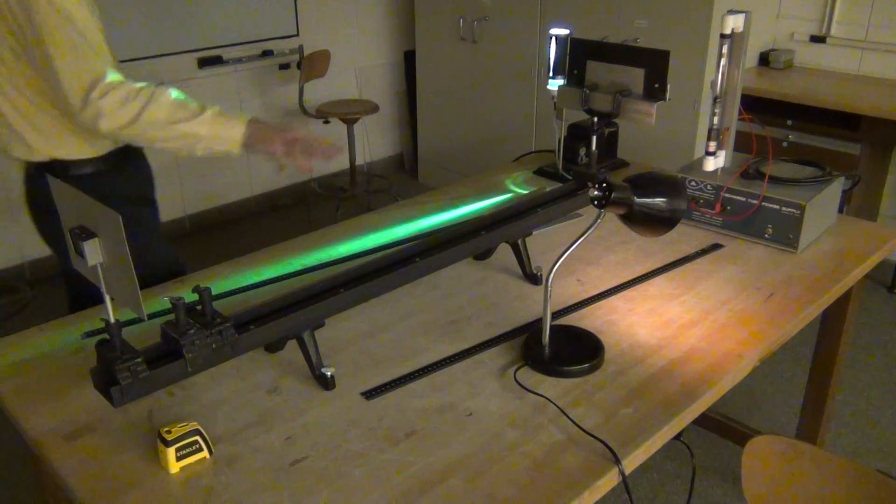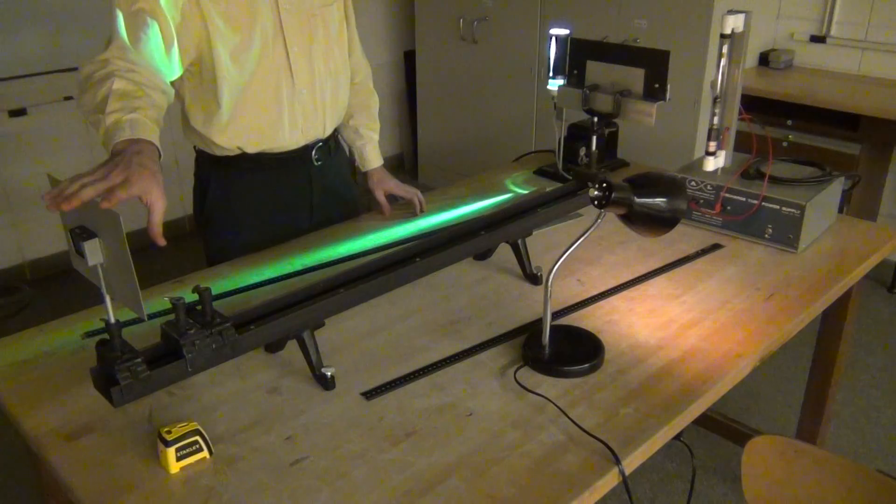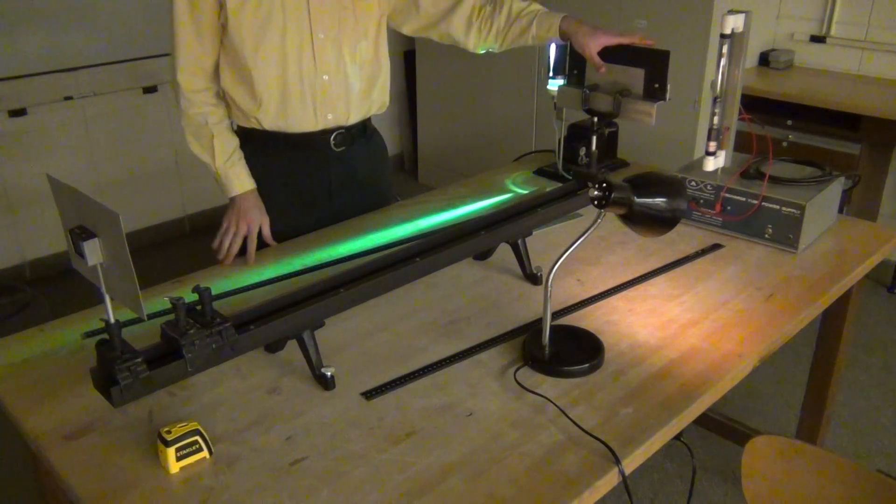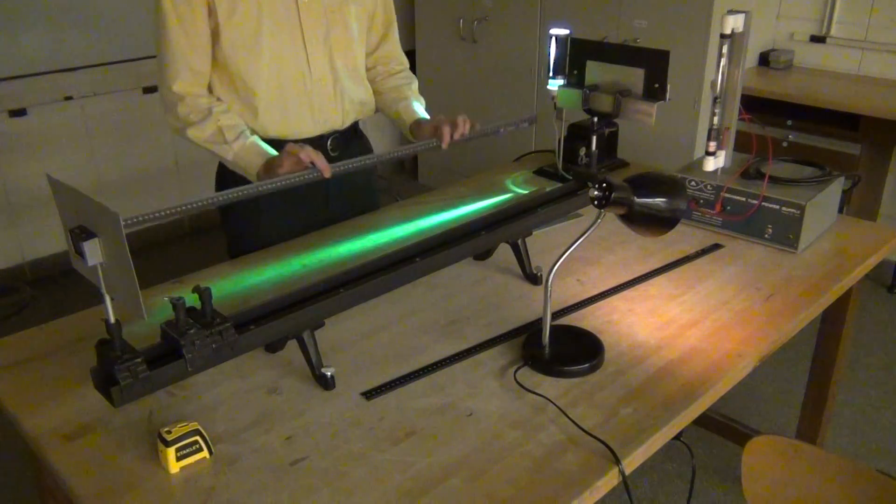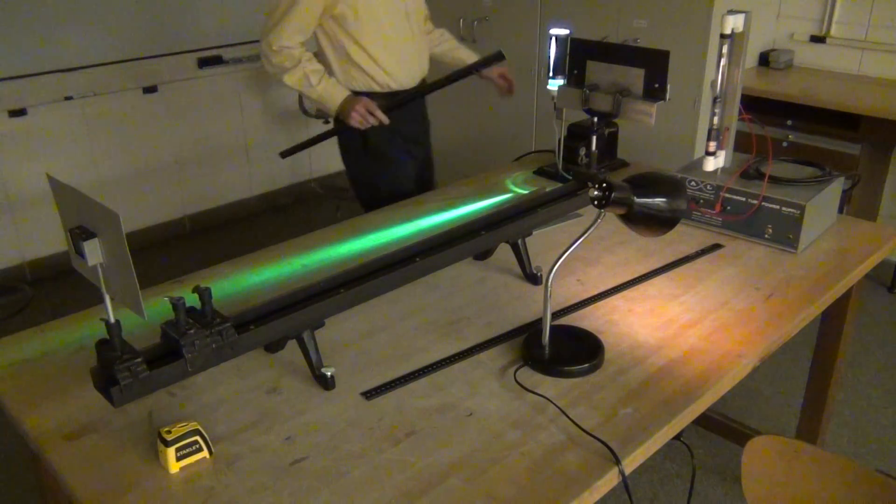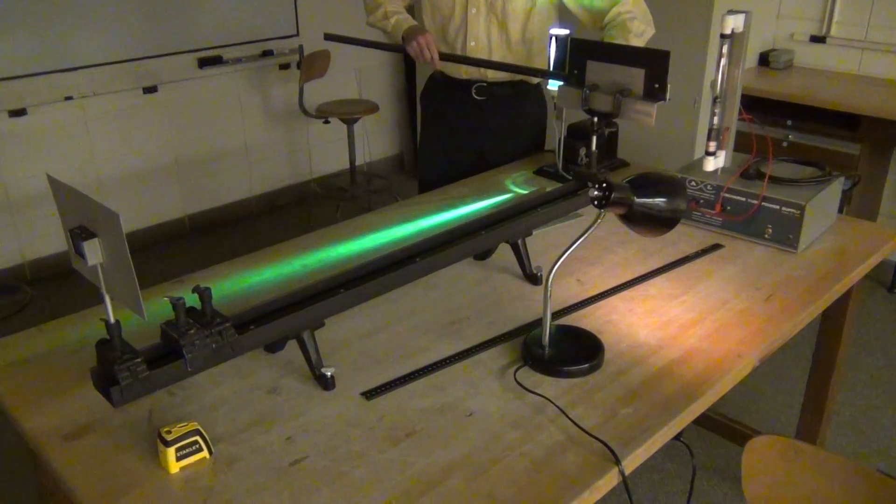Here we have an optical bench with a diffraction grating on one side and a holder that we'll use to build a spectrometer out of. You'll have two black rulers that you can slide into the holder.